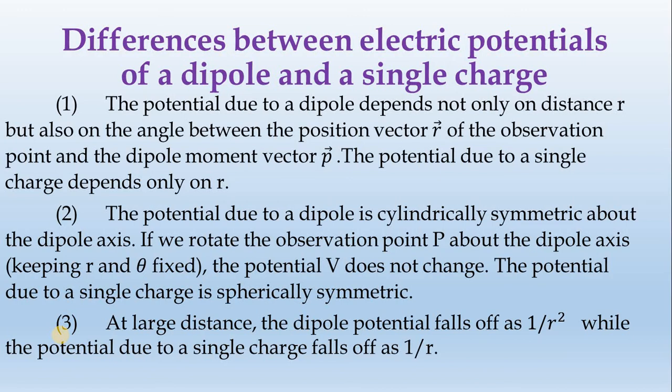Third point: at large distance, the dipole potential falls off as 1 divided by r squared. For a point charge, the potential falls off as 1 divided by r — not 1 divided by r squared. So the dipole falls off as 1/r², while the single point charge falls off as 1/r.